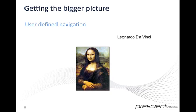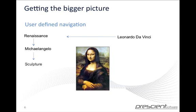So now we understand how the blocks fit together, let's put it together and get the bigger picture. Here we have an example again of the Mona Lisa, which as we described was painted by Leonardo da Vinci. We take Leonardo da Vinci and maybe go and have a look at the Renaissance, which is obviously the period in which he painted the picture. And from there we go to Michelangelo, who was another Renaissance painter. And from Michelangelo, we start to have a look at some of his sculptures.